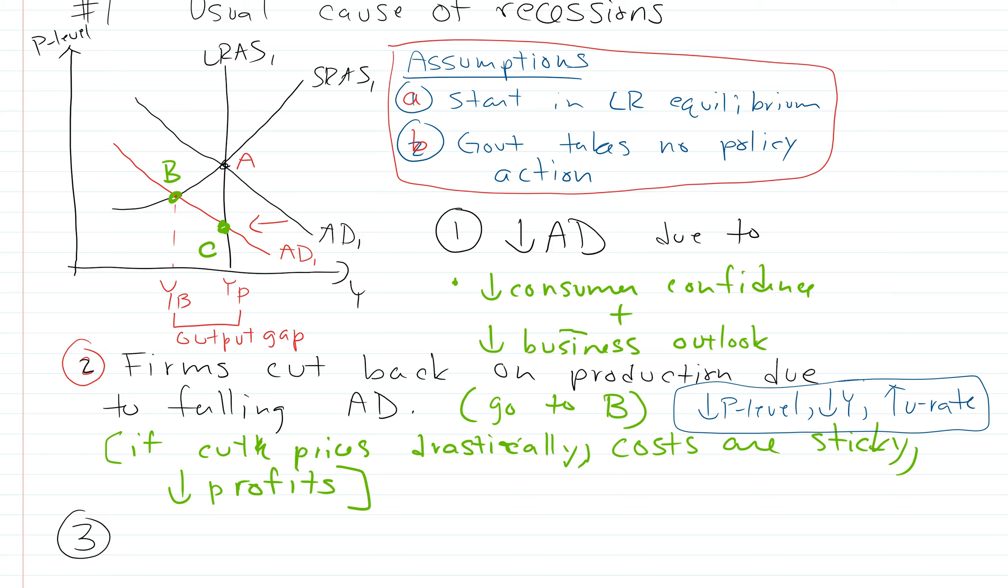So now we're in a bad situation at B. We could have avoided this situation if everyone just cut their prices and wages and everything else straight away. We would have just come straight from A to C. We would have seen deflation, but we would have stayed in equilibrium and people wouldn't have had to lose their jobs. It's this kind of magical land of money where everybody can just do it all at the same time. But this doesn't happen. So the question is, will we stay at B forever?